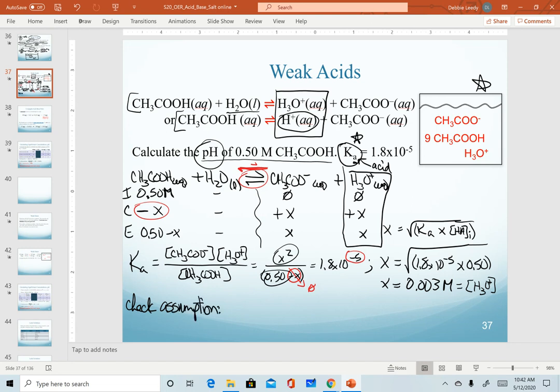Checking assumption is the value of x over our initial acid concentration times 100. That's going to give us 0.003 over our initial of 0.50 times 100. And as long as this is less than 5, we are good. This comes out to be 0.6. And that's all the calculator gives us.